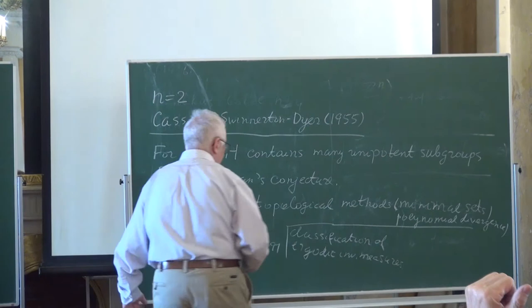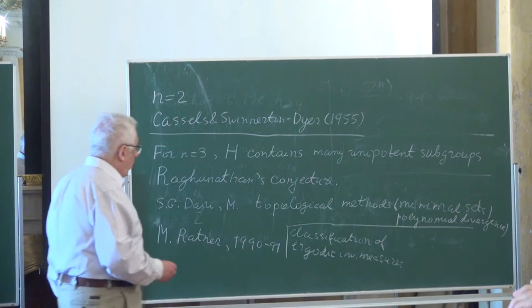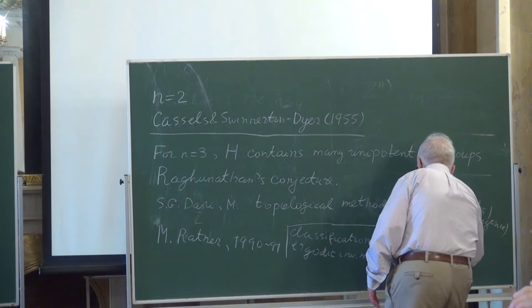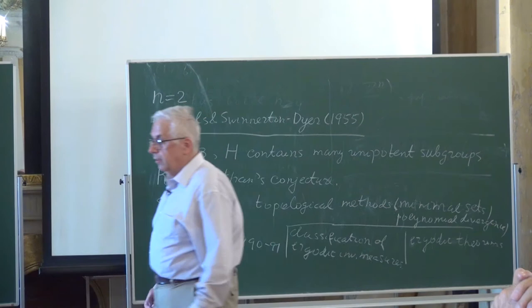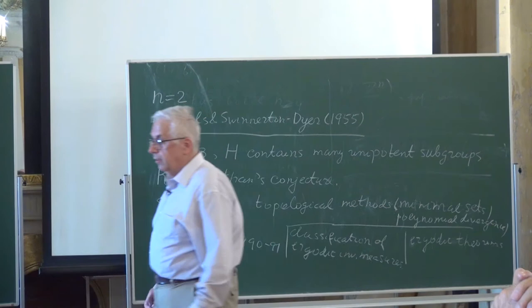Raghunathan's conjecture: we have a group U acting on G/Γ, where U is generated by unipotent elements. The closure of the orbit Ux should be of the form LX where L is some bigger closed subgroup. This is also related to what can be called effective proofs.